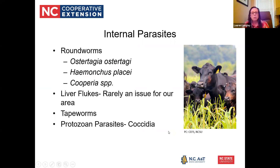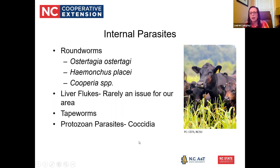As far as what types of internal parasites affect cattle: we have roundworms — three different ones I'll talk about tonight — and liver flukes, which are more of an issue in other parts of the country than here in North Carolina. Tapeworms are definitely out there; they're not a huge concern in my opinion, but something to be aware of. And then coccidia, which probably costs the beef cattle industry more money than any other internal parasite. It's actually a protozoa-type parasite.